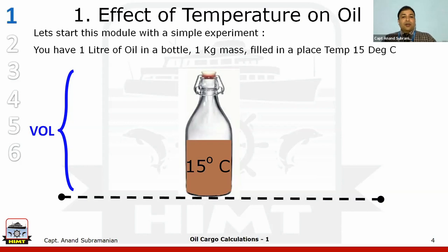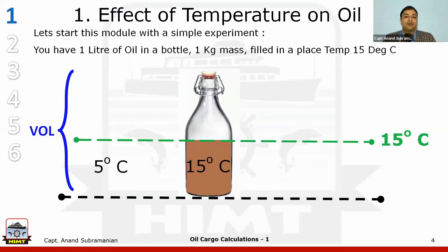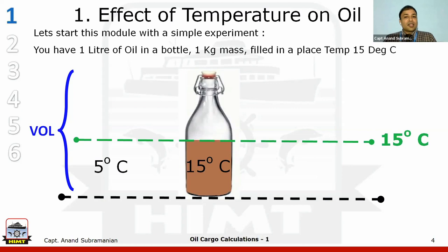We are mainly going to concentrate on the volume part. Pay attention to the volume and answer the questions. This is the level when the oil is at 15 degrees Celsius — I'm putting a small green line over there for reference. The black line is the base, the green line is the oil level at 15 degrees Celsius. Now the question: if we go to a place which is colder — about 5 degrees Celsius — what will happen to the volume of the oil? Will it increase, decrease, or remain the same? It decreases.